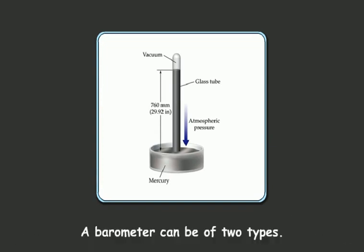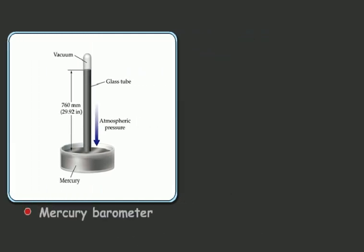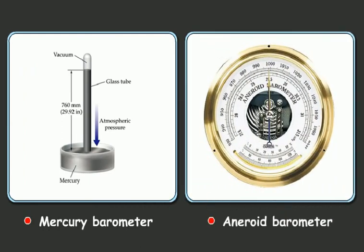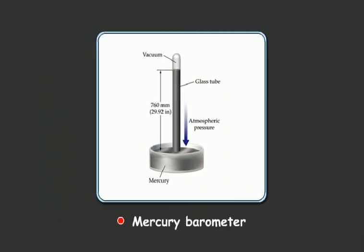A barometer can be of two types: mercury barometer and aneroid barometer. Here we will learn about the mercury barometer.